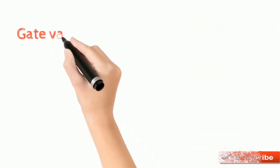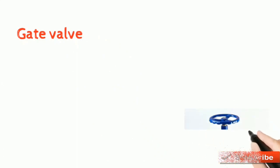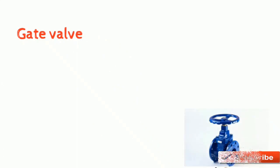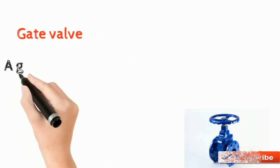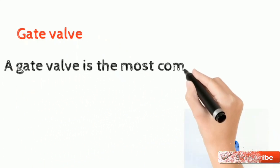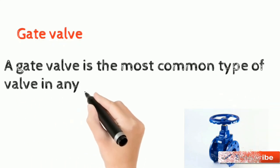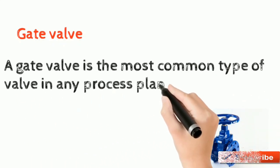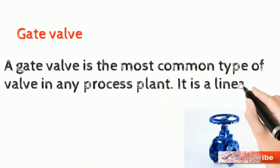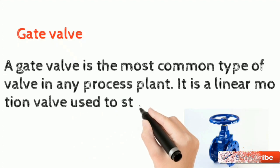A gate valve is the most common type of valve in any process plant. It is a linear motion valve used to start or stop fluid flow. In service, these valves are either in a fully open or fully closed position.